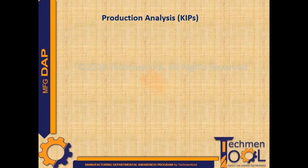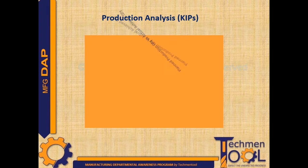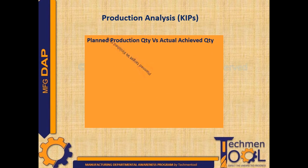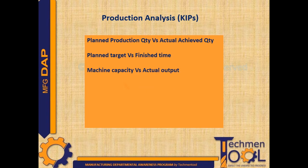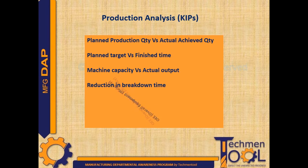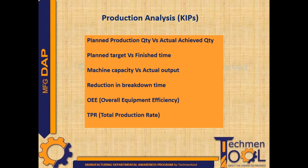These are the general production analysis KPIs of the PPC department, which includes planned production quantity versus actual achieved quantity, planned target versus finished time, machine capacity versus actual output, reduction in breakdown time, OEE (overall equipment efficiency), and TPR (total production rate).